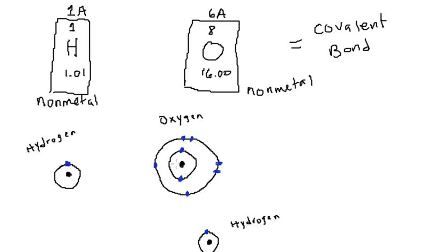I drew an oxygen atom here. Oxygen has a total of eight electrons. In the first shell, the first shell can only have two electrons. And in the second shell, the second shell can only have a total of eight electrons. But because oxygen has a total of eight electrons in all, I could only draw six electrons in the outer shell and two electrons in the inner shell to make a total of eight electrons. The number six, where it says 6A, means that oxygen has a total of six valence electrons — six electrons in its valence shell or outermost shell.